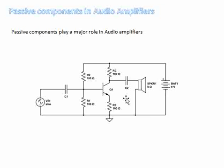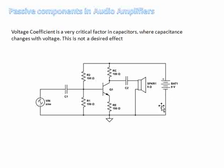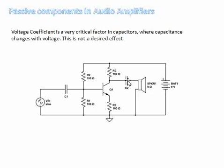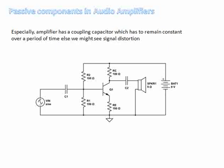The specifications of these passive components are very important for the functionality of the audio amplifier. One important parameter of the capacitor is the voltage coefficient, which shows the amount of variation of capacitance with voltage. This is not desirable because with varying voltages, the capacitance should remain stable over a given voltage range. Voltage coefficient is therefore a very crucial factor when selecting the capacitor.